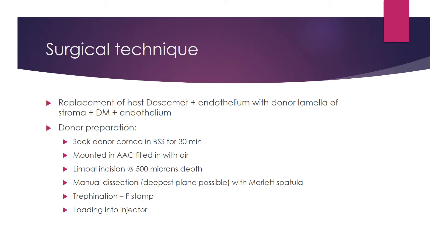In terms of the surgical technique, it consists of replacing the host Descemet's and endothelium with a donor lamella that consists of a thin slice of stroma plus Descemet's plus endothelium. For donor preparation, I soak the donor cornea in BSS for 30 minutes to swell it up, which works for two main purposes. Number one, it makes the dissection of the corneal lamella easier, and number two, if you get a lamella of approximately 150 microns that has been soaked in BSS, when it is implanted and the endothelium starts to pump, by definition it's going to be even thinner. So in other words, you can get thinner donor lamellae by soaking the donor cornea in BSS.